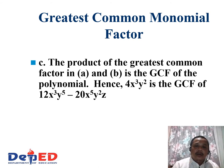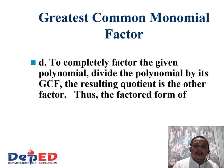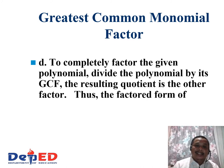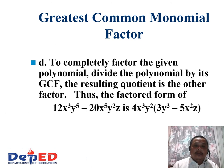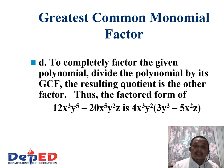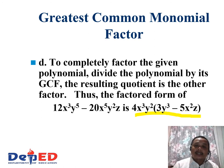Hence, 4x cubed y squared is the GCF of 12x cubed y to the fifth power minus 20x to the fifth power y squared z. To completely factor the given polynomial, divide the polynomial by its GCF — the resulting quotient is the other factor. Thus, the factored form is 4x cubed y squared times the quantity of 3y cubed minus 5x squared z.